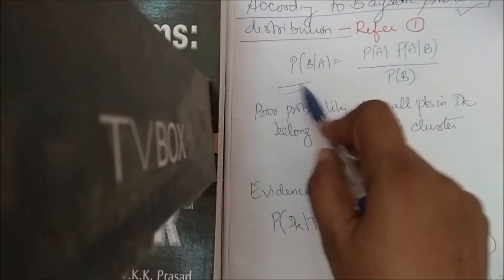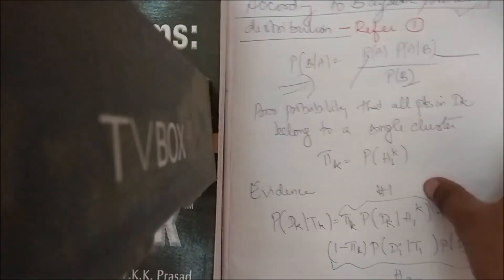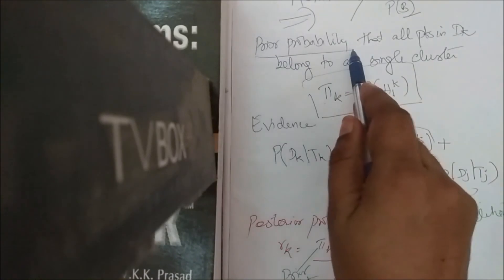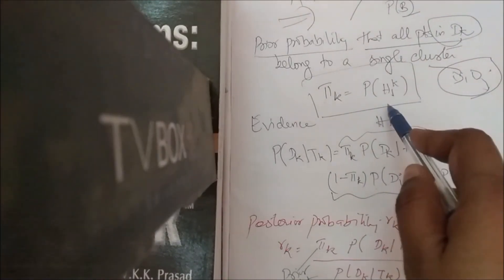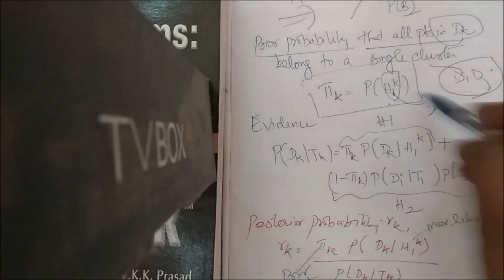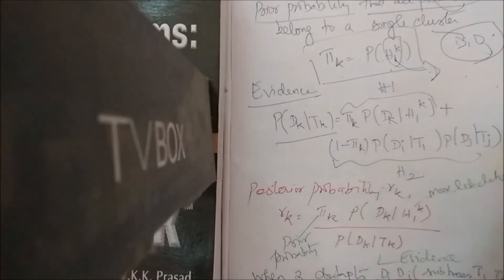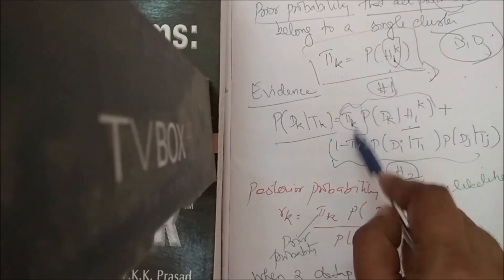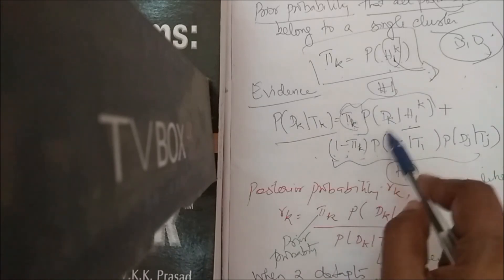According to Bayes' theorem — prior probability, maximum likelihood, and evidence — we apply it to our case. We notate πk as the prior probability that all points in dk (i.e., di and dj) belong to a single cluster. This is given by πk = p(H1k). The evidence denominator considers both H1 and H2, where H1 probability is πk and H2 is (1 − πk), so together they sum to 1.